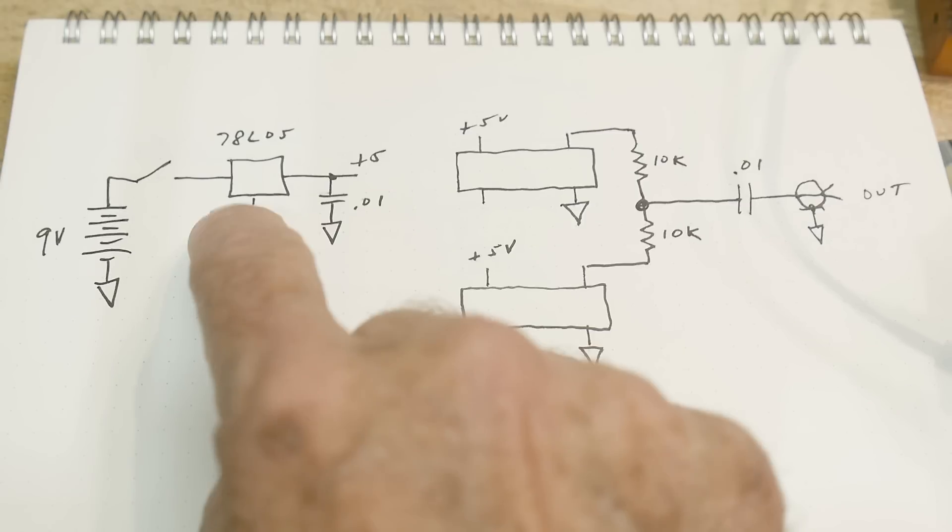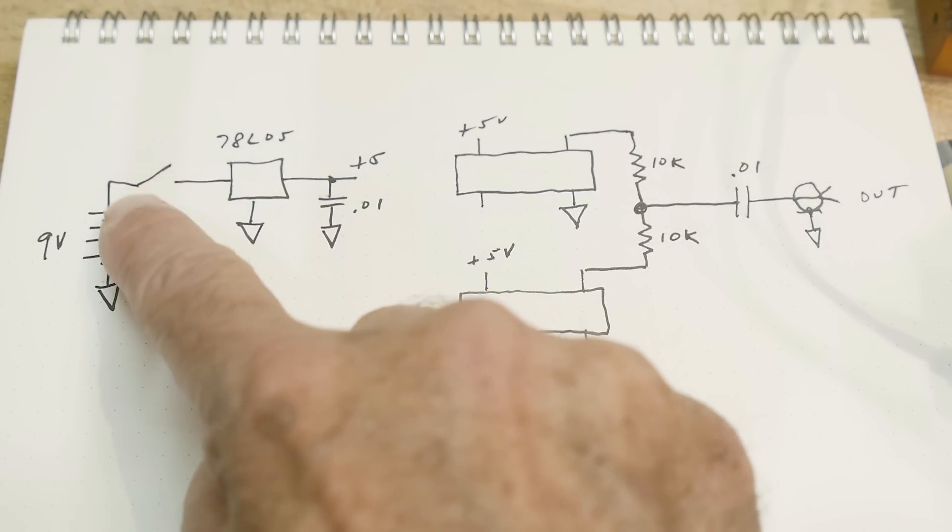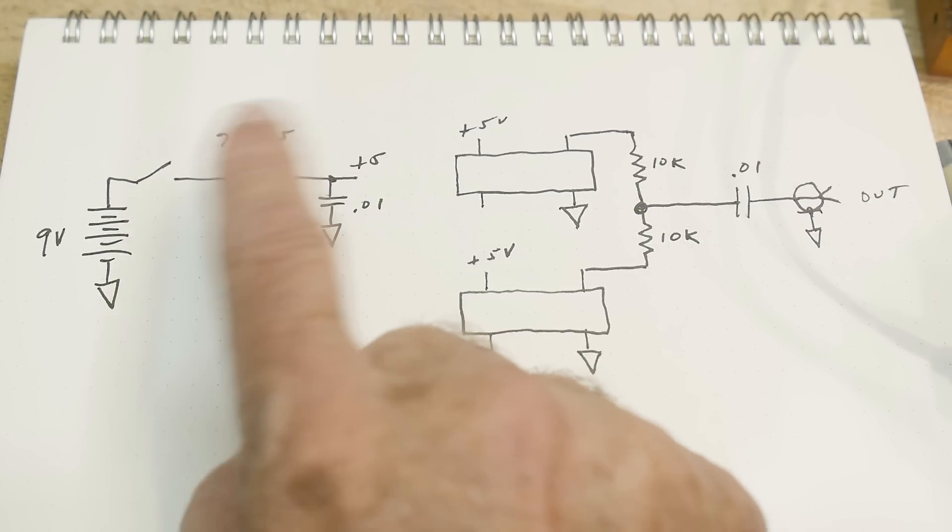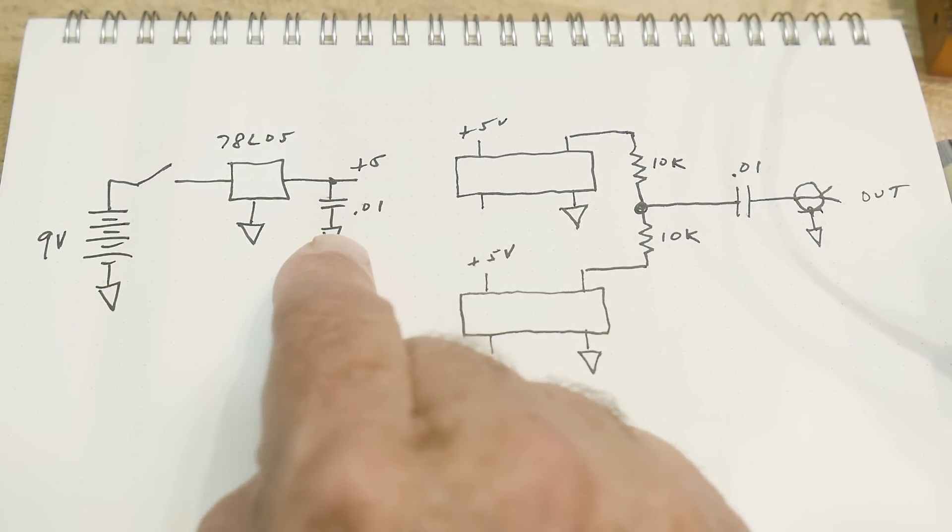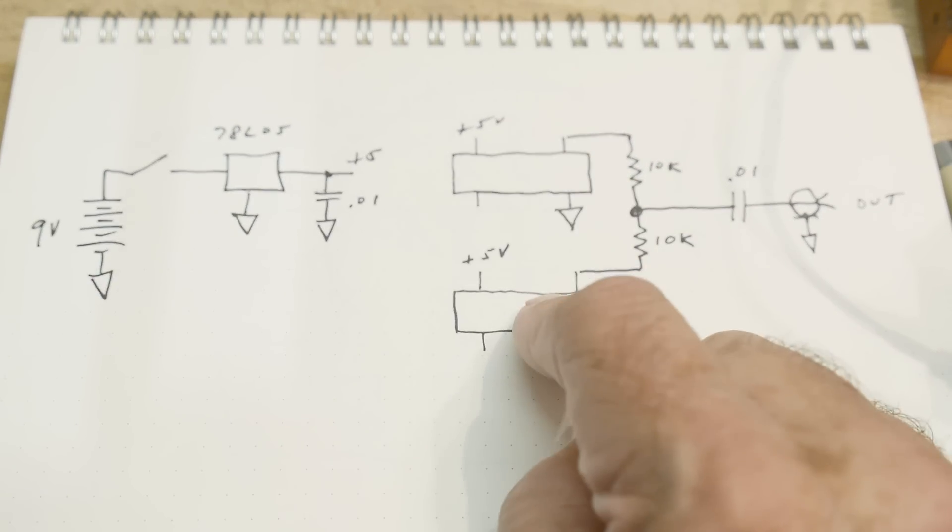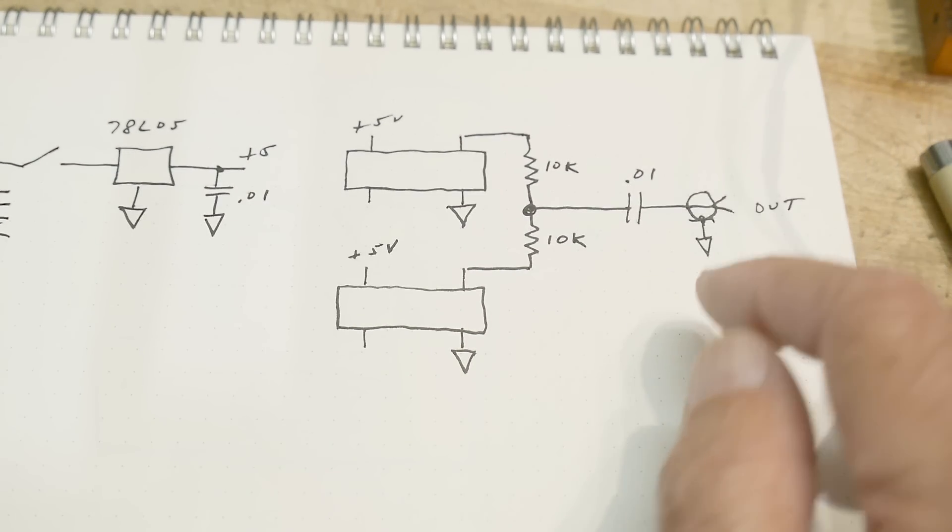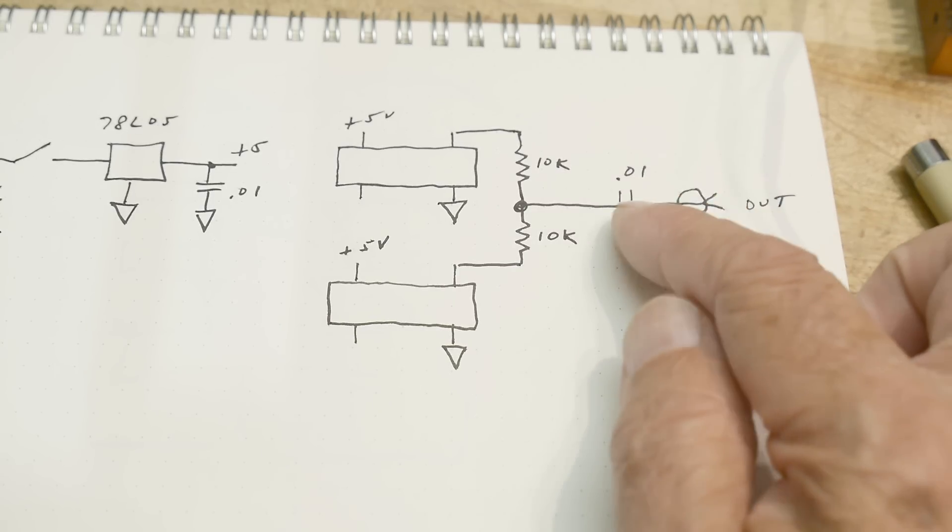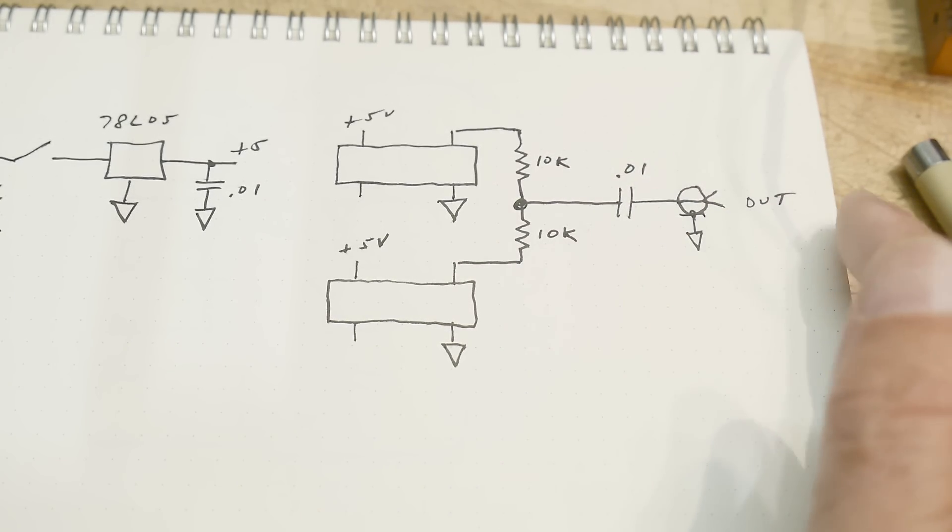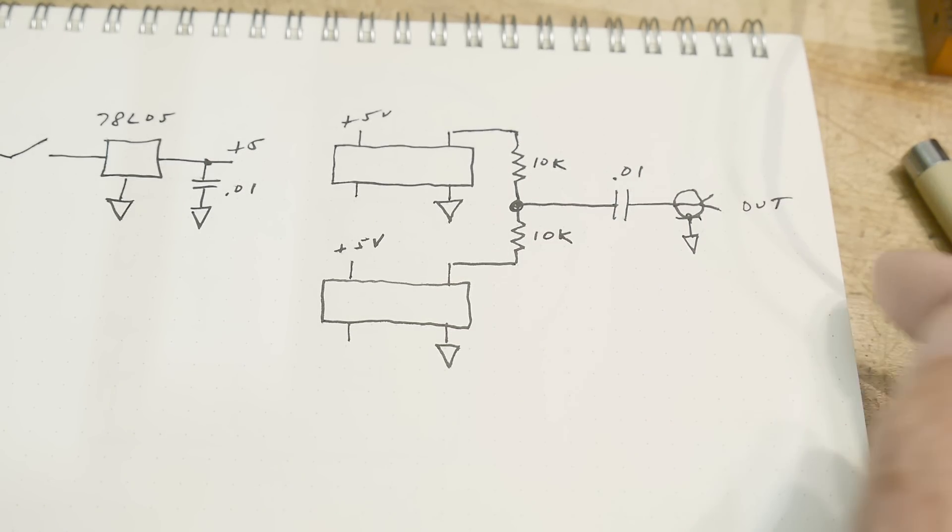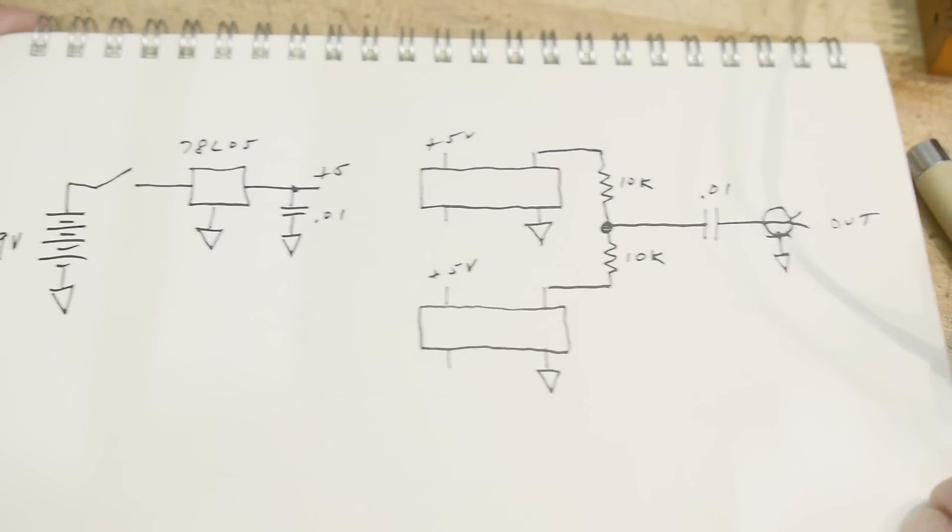So let's take a look at the schematic. It has a 9-volt battery, a switch. It's a momentary switch. It has a 78L05, so it regulates the voltage down to 5 volts. And then it powers up the two oscillators. The two oscillators are combined with 10k resistors. It's AC coupled to the output, so there'll be no DC bias on it. And hook it up to a spectrum analyzer. Very simple.